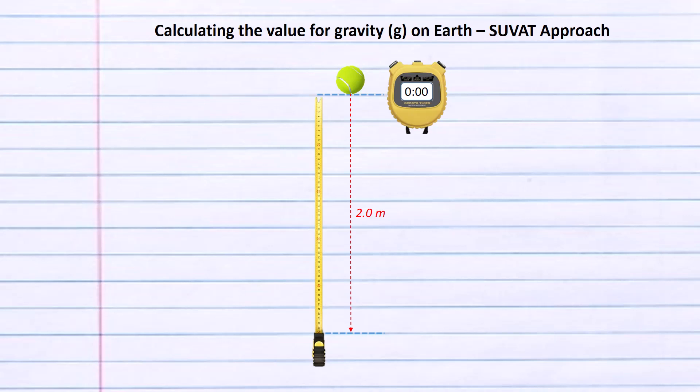On the screen at the moment you can see we have a ball that's been elevated a height of two meters and we've got a stopwatch. Quite simply we're going to record the time it takes for the ball to fall through the two meters.